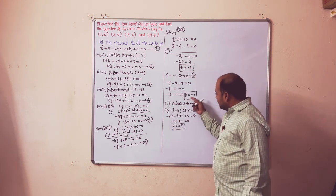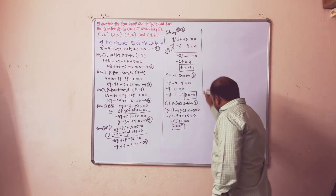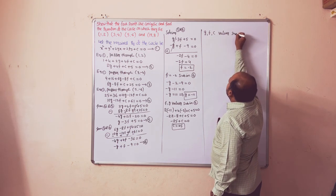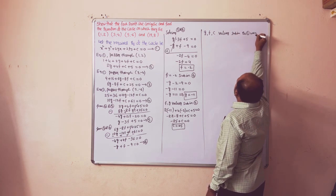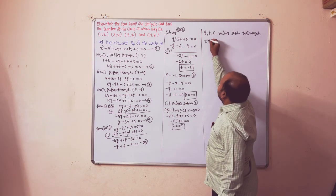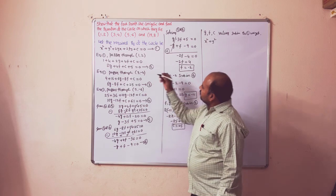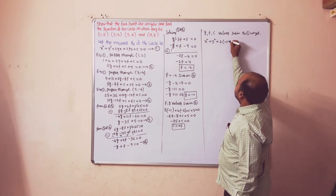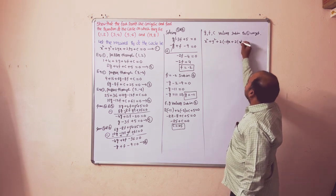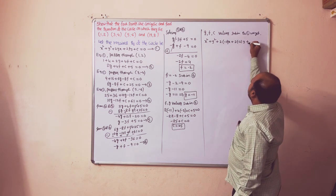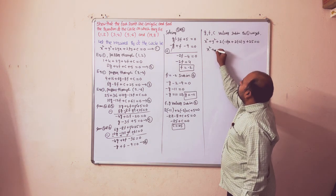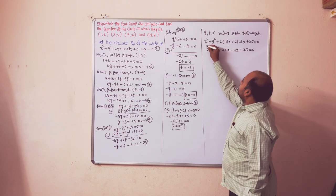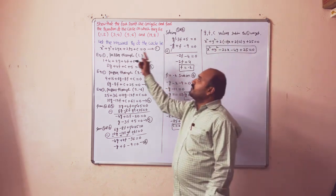Substituting g, f, and c values into Equation 1 gives the equation of the circle: x² + y² - 22x - 4y + 25 = 0. This is the equation of the circle passing through the given points.